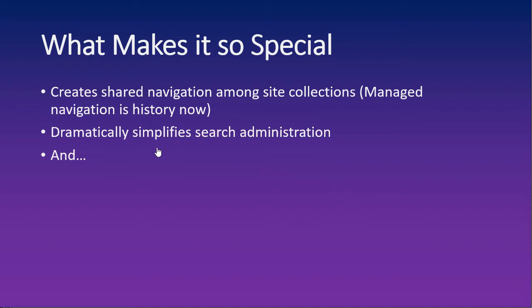The other thing is that the hub dramatically simplifies search administration. When it comes to search, all the site collections that are part of the hub are automatically scoped into one search area. When you search from within the hub, by default it searches all the site collections in that hub. You can extend it using SharePoint search capabilities, but that's the typical scenario. Before, you could search a web or a site collection; now your search scope is automatically assigned to everything in the hub — no administration or configuration required.